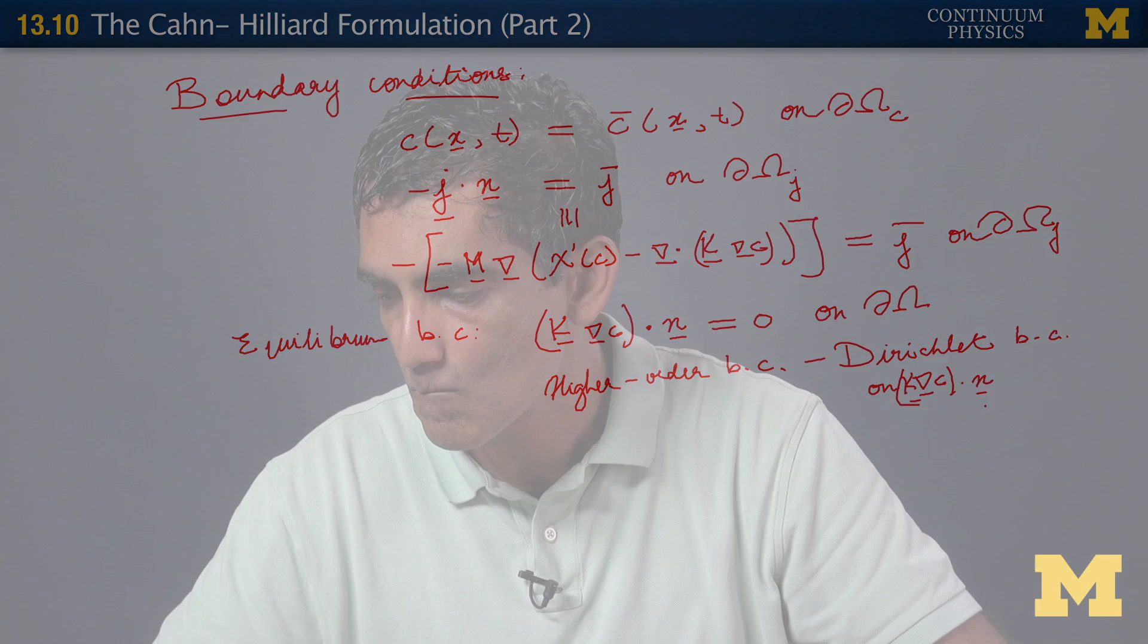A great deal more can be said about it, but I will just stop it at this point. Of course, if we intend that the system should never reach equilibrium, we don't need to have this equilibrium boundary condition. You can have other types of higher order boundary conditions.